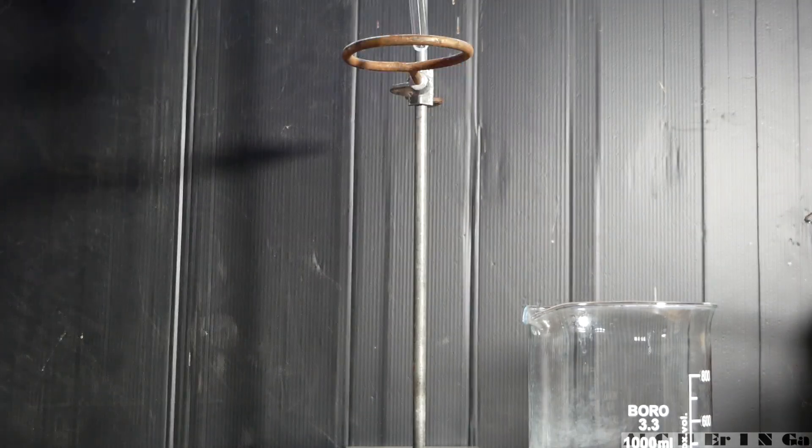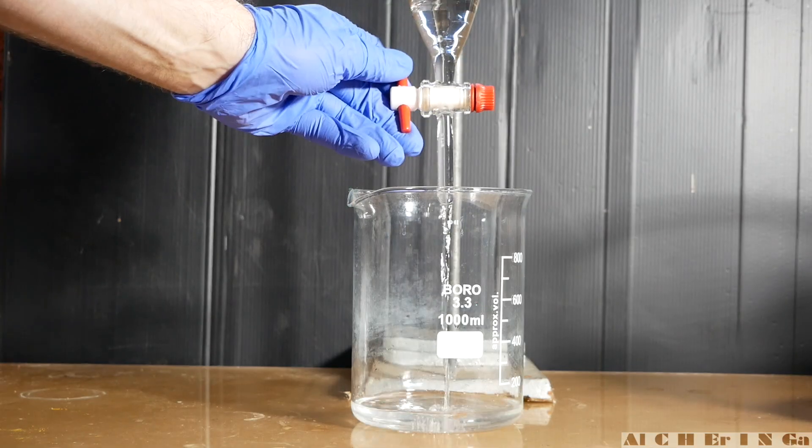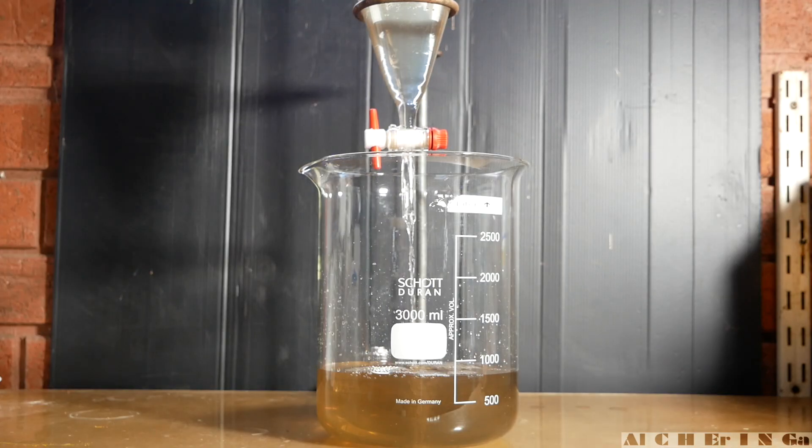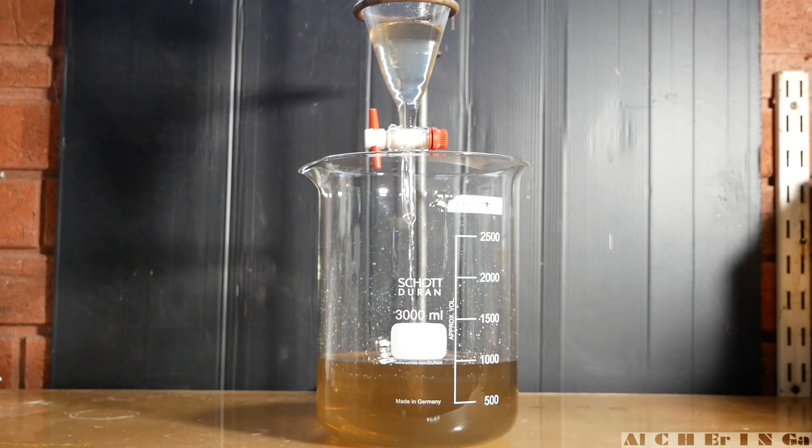Swirl the separatory funnel, vent and decant the bottom layer to a beaker and discard. Drain the upper layer to the beaker. This is the first washing with dichloromethane complete.